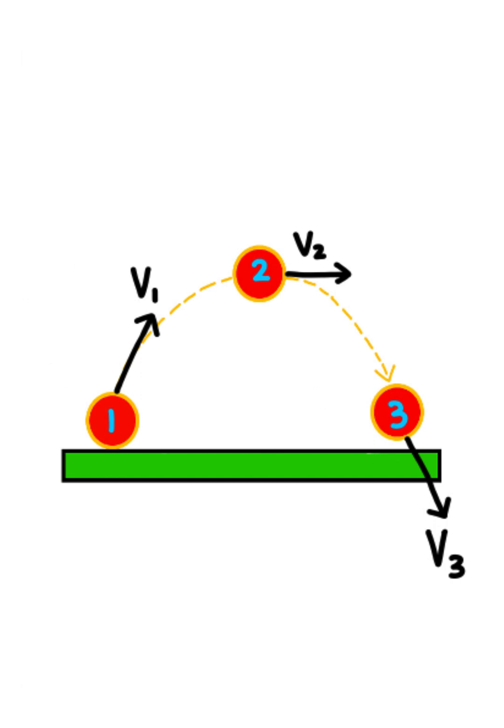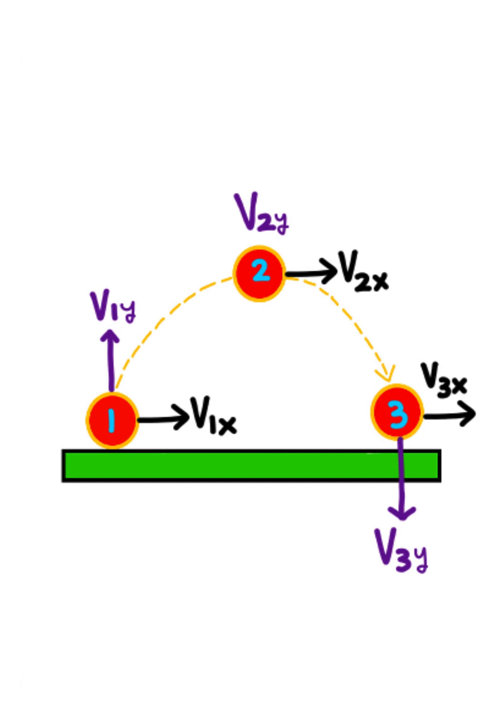What I'm going to do is take each one of these velocity vectors and split them up into components. Notice how the vertical component is initially pointing up, then it goes to zero, and just before the end of the flight, it points down.